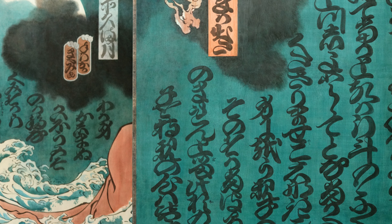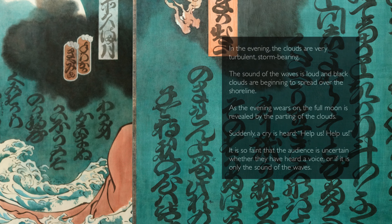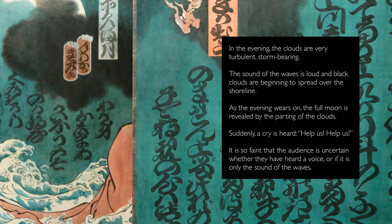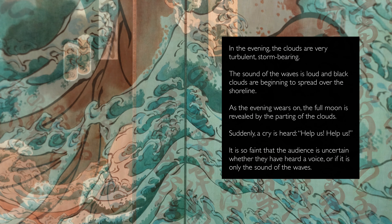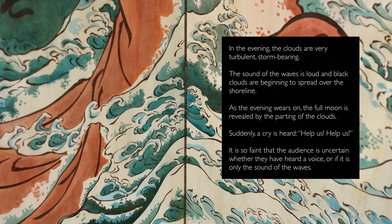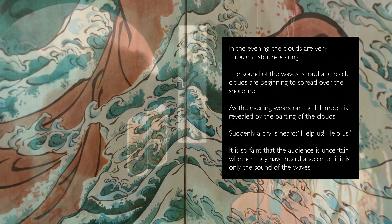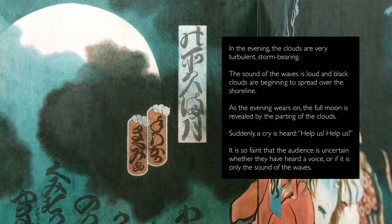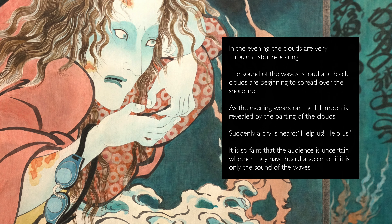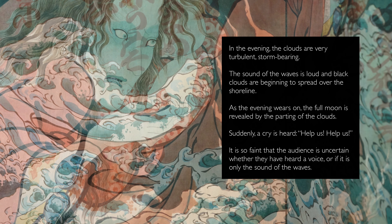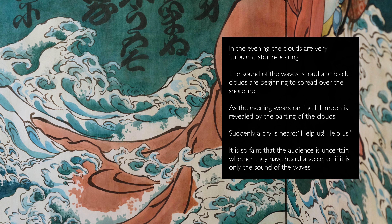The inscription paints a beautiful picture of the scene: 'In the evening, the clouds are very turbulent, storm-bearing. The sound of the waves is loud, and black clouds are beginning to spread over the shoreline. As the evening wears on, the full moon is revealed by the parting of the clouds. Suddenly, a cry is heard — Help us! Help us! — it is so faint that the audience is uncertain whether they have heard a voice, or if it is only the sound of the waves.'